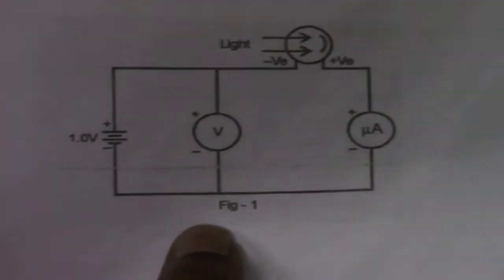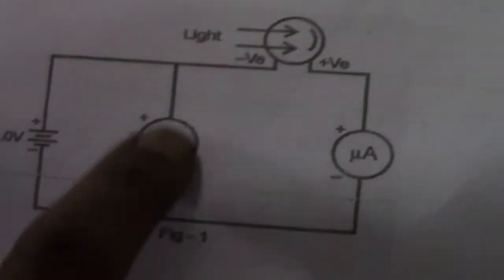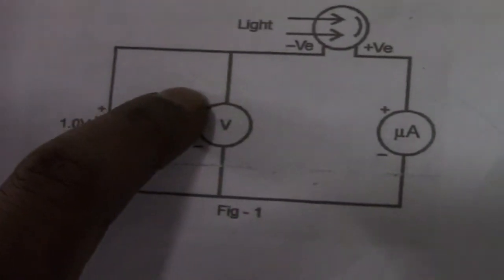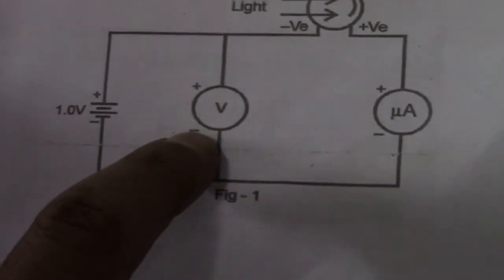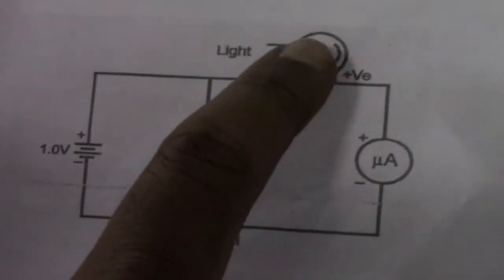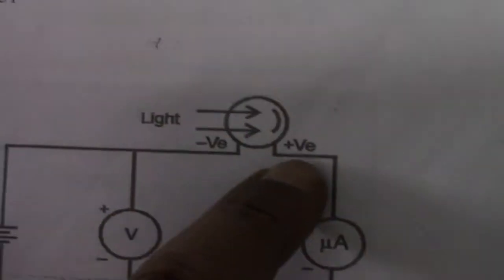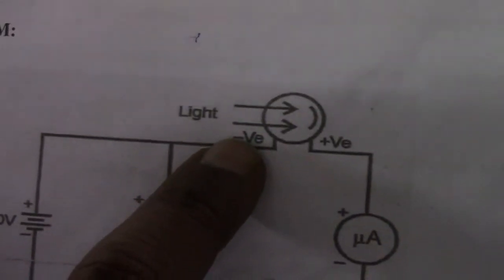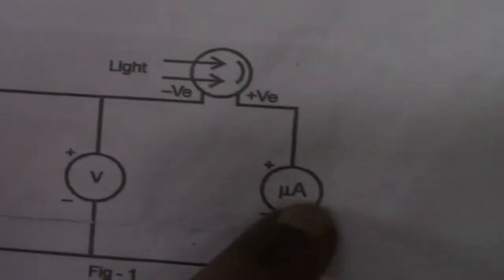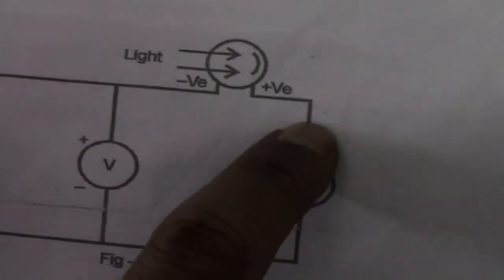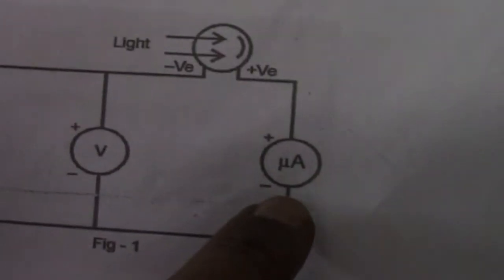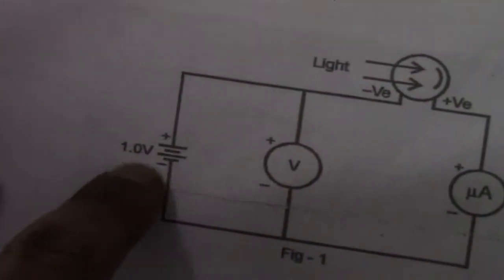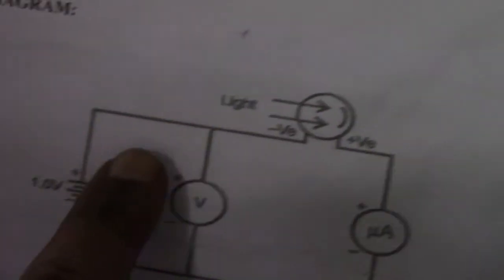Let me explain how to connect the circuit. This is the circuit diagram for this experiment. It consists of a voltmeter — this is the voltmeter positive terminal and this is the voltmeter negative terminal — a photocell with its positive and negative terminals, a microammeter with its positive and negative terminals, and a battery.